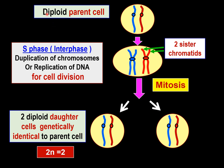Let's use the example of a diploid parent cell to explain how mitosis helps it produce two genetically identical daughter cells. Say we have a diploid parent cell with two chromosomes of the same structure, same length, and same position of centromere — these are called homologous chromosomes. One is the paternal chromosome and one is the maternal chromosome. This cell is diploid because it has two copies of this type of chromosome, so 2n equals two.